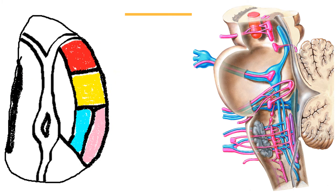The last output of the red nucleus is its connection to the ventrolateral nucleus of the thalamus, with output projecting from the red nucleus to the ventrolateral nucleus of the thalamus.